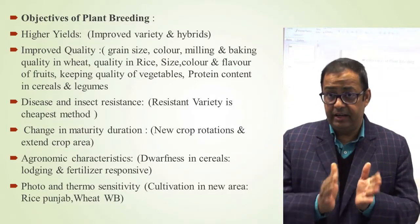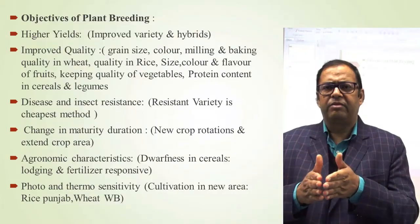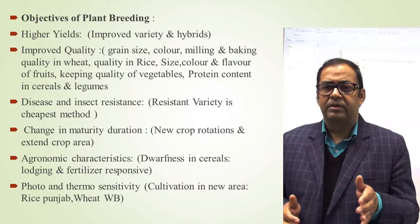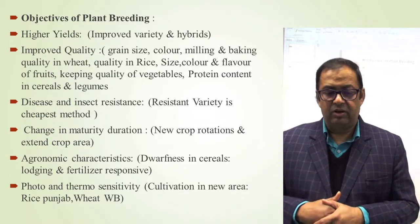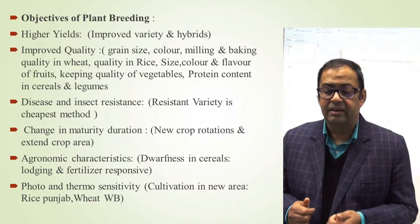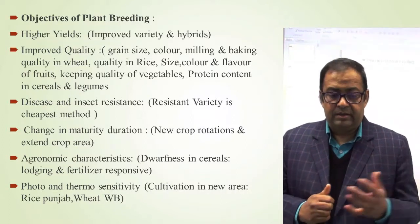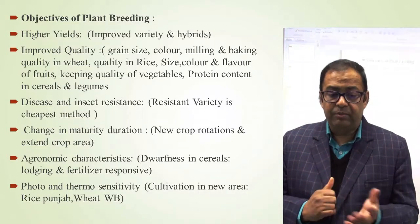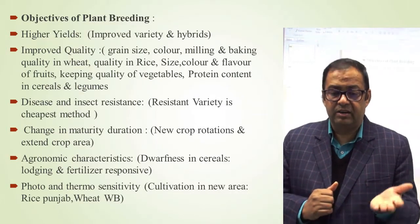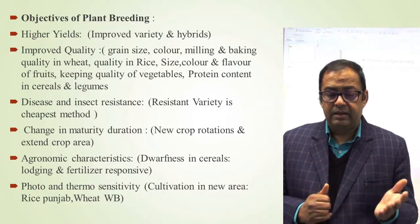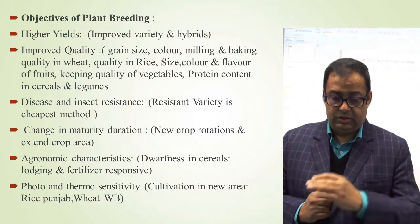The second objective is improved quality. Once we achieve quantity — yield — then we concentrate on quality. For every crop, different quality characters are important. In wheat, grain size, colour, milling and baking quality are important. In rice, cooking quality is more important. In fruits, size, colour and flavour are important. In legumes and cereals, protein content is very important.